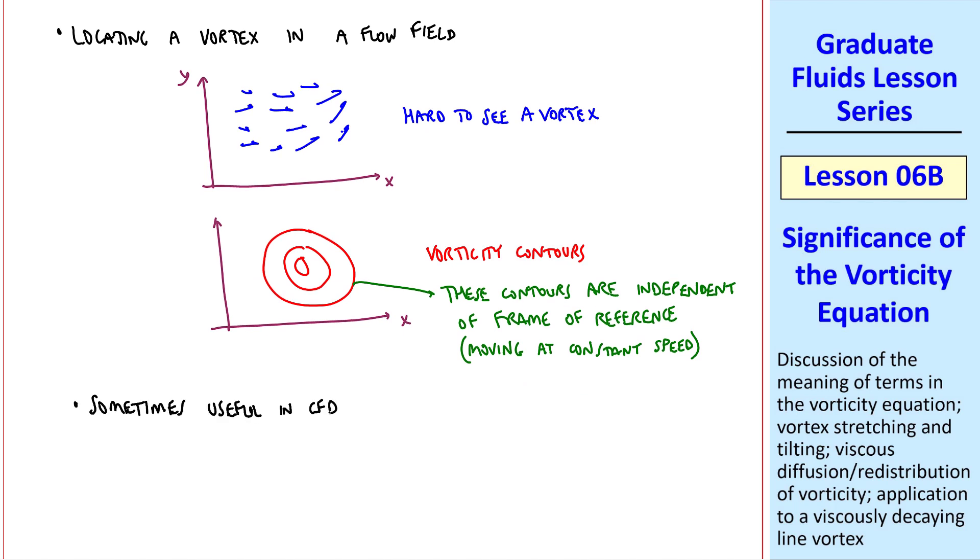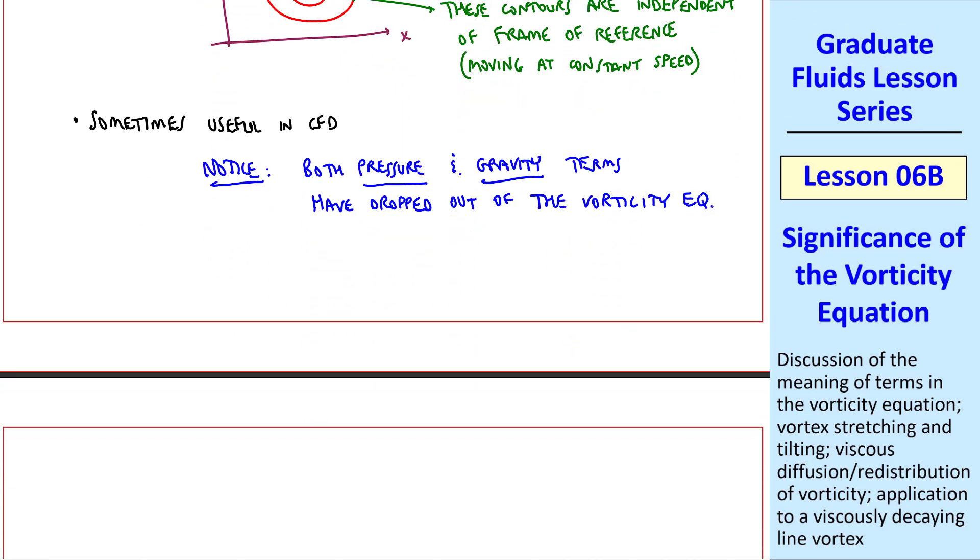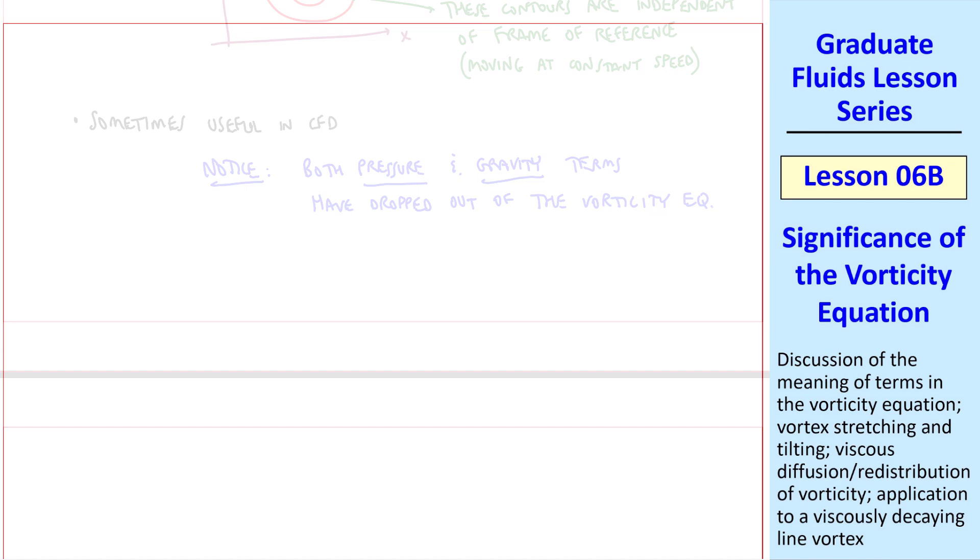Another advantage, it's sometimes useful in CFD to work with vorticity instead of velocity. And you may have noticed both pressure and gravity terms have dropped out of the vorticity equation. For example, we'll solve the vorticity equation for the viscously decaying line vortex later on in the course.